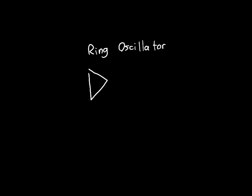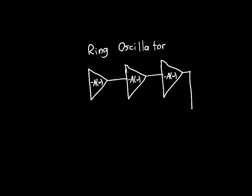Today we're going to analyze one of the simplest oscillators: the ring oscillator. In its most general form, the ring oscillator is a set of three inverting amplifiers. Each of the amplifiers has a gain of minus A, which is in general a function of omega. At DC, we assume the gain minus A(ω) is just some constant, minus A0.